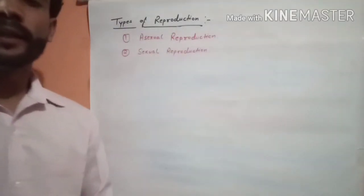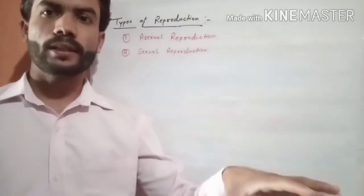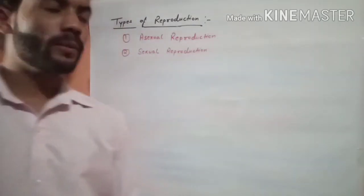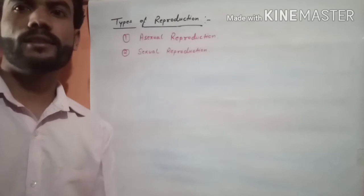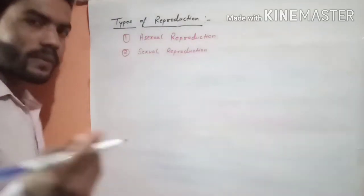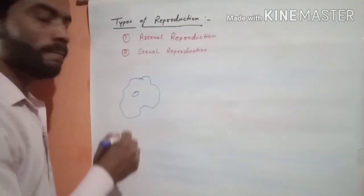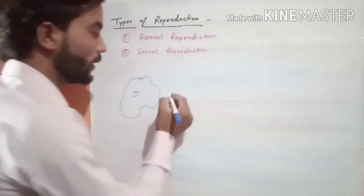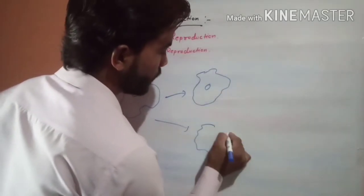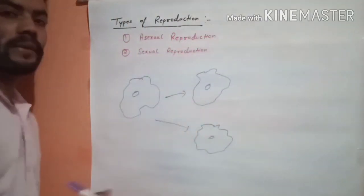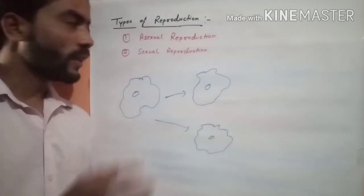Sexual reproduction और asexual reproduction. Asexual reproduction का मतलब होता है कि एक single organism अपने जैसे similar दिखने वाले organism को produce करता है। इसमें सिर्फ एक single organism की जरूरत होती है। यह process छोटे organisms में होती है जैसे bacteria, virus और protozoa में। जैसे Amoeba — यह asexual mode of reproduction दिखाता है। यह अपने आपको divide करता है, एक से दो cells बनाता है। यह unicellular organism है, एक organism से दो organisms बनाता है। जो दो daughter cells होती हैं वो parental cell की exact copy होती हैं। इस process को हम asexual reproduction बोलते हैं।